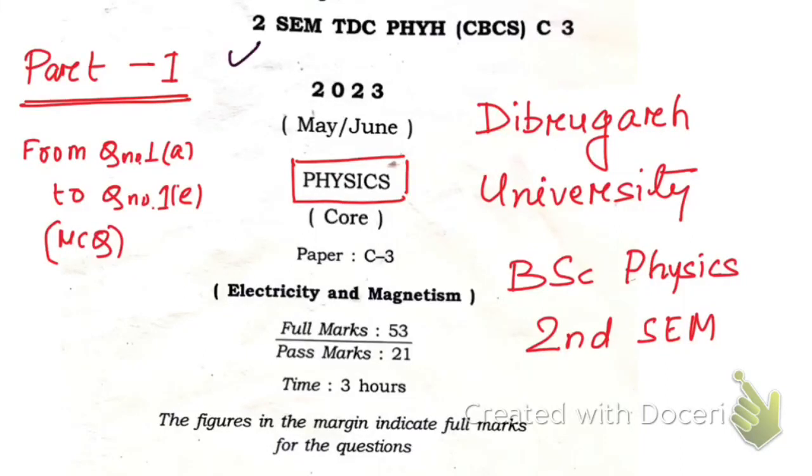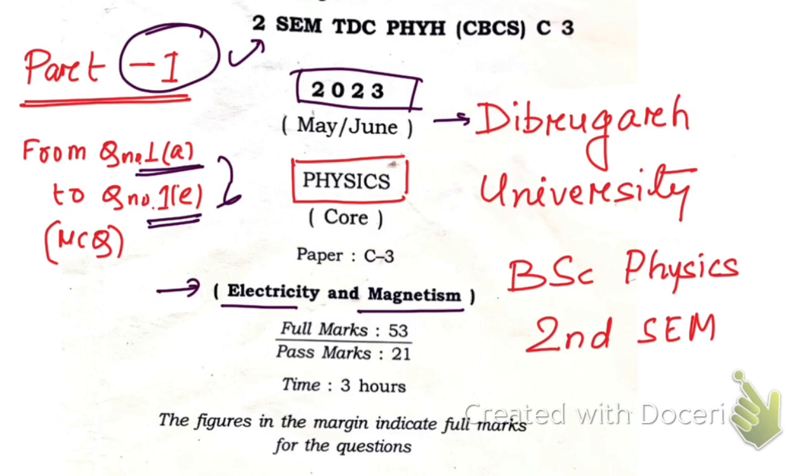Hello friends, in this video we are going to solve this paper of second semester BSc Physics - Electricity and Magnetism, 2023, from Dibrugarh University. In this part, Part 1, we are going to solve from question 1a to 1e. This paper will be completed in four or five parts. I'm going to upload one by one.